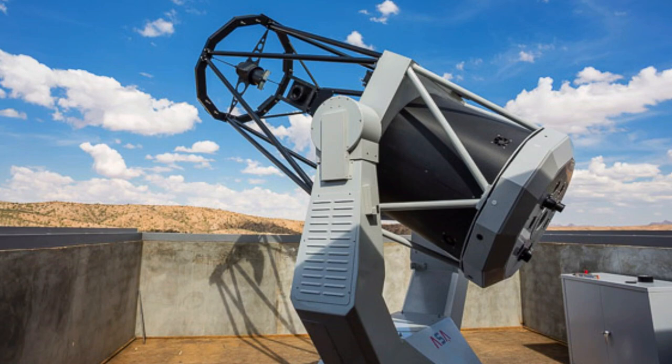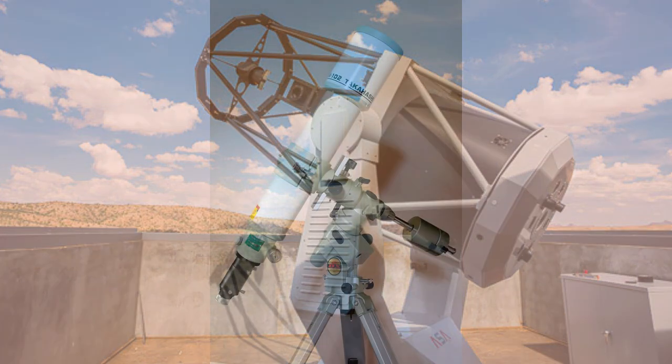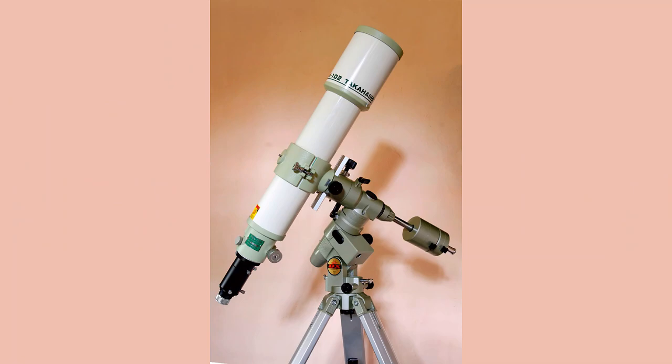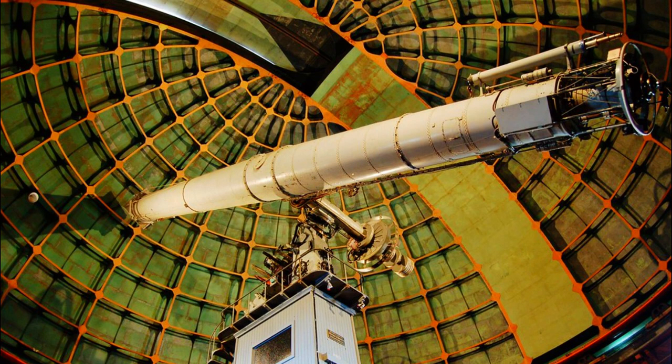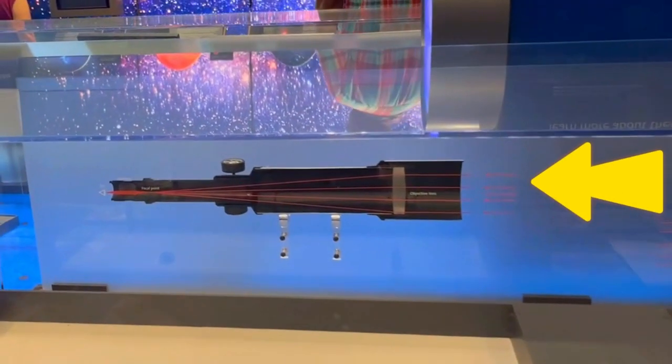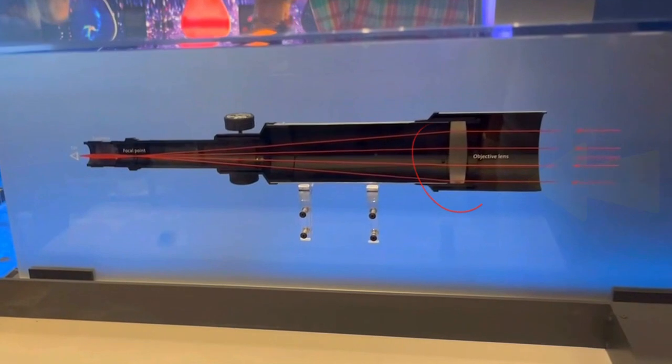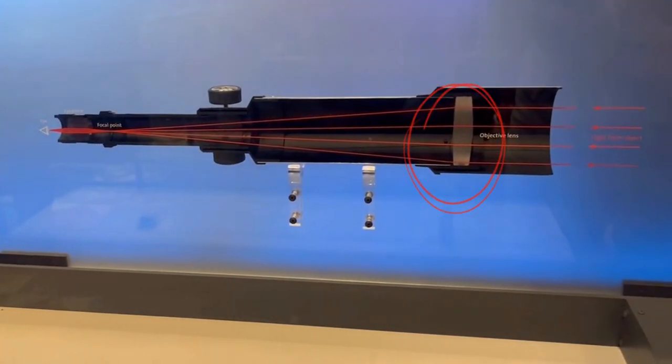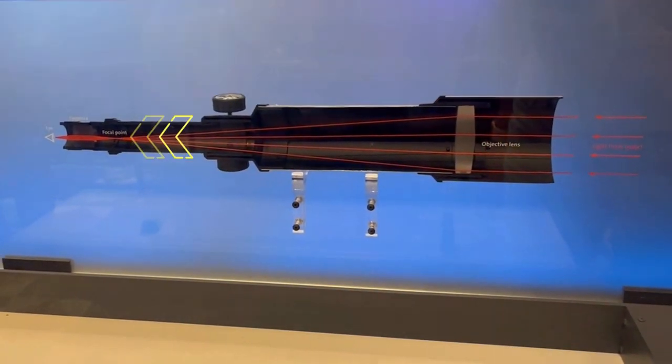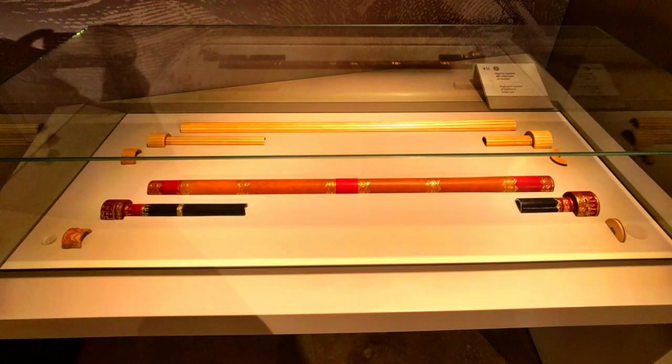Many personal and smaller research telescopes are refractors, like the 36-inch Great Lick Refractor at Lick Observatory. Light enters one end of the telescope, passing through curved glass lenses, and then it's focused into an eyepiece at the opposite end. This is the kind of telescope Galileo used to make his groundbreaking discoveries.